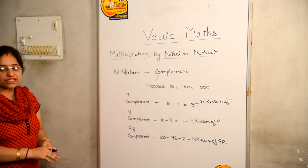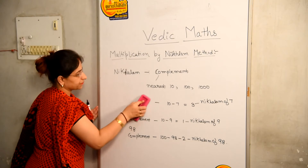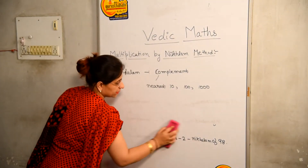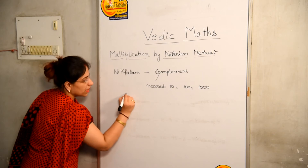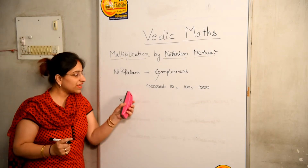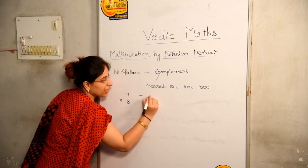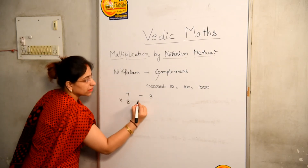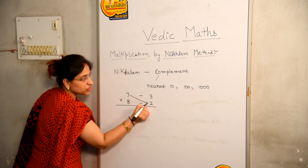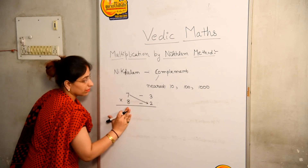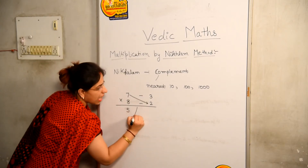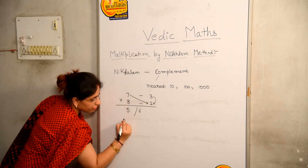Now let us start with the multiplication. Let us suppose I need to multiply 7 by 8. Now 7 is nearest to 10, its Nikhilam will be 3. And the Nikhilam of 8 will be 2. Now either subtract 7 minus 2, that is 5, or 8 minus 3, that is again 5. And 3 into 2 is 6. So your answer will be 56.